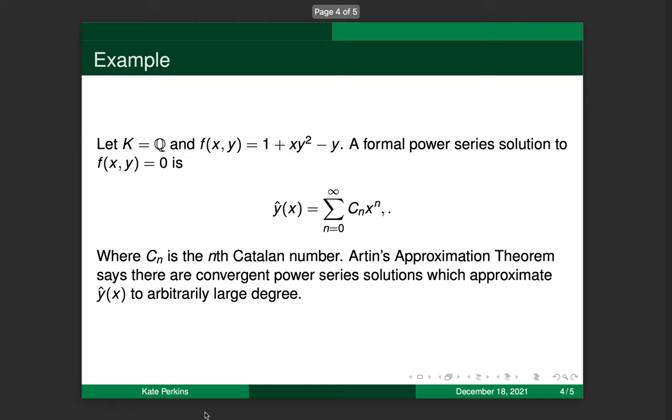So here's just one example of this theorem. If we take k to be the field of rationals and little f to be this polynomial, one plus x times y squared minus y, then we can actually do a Taylor series expansion and derive this formal power series solution. You can see it has infinitely many terms. And the coefficients happen to be the Catalan numbers, which is kind of cool. So what Artin's theorem tells us is that we can find convergent power series solutions whose low degree terms match y hat of x to arbitrarily large degree.